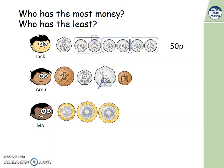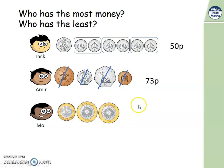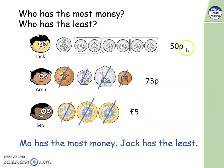Let's have a look at Amir. Remember, we always start with the largest amount and add on from there: 50 pence, add 20 pence — that's 70 pence, add 2 more — 72 pence, add 1 more — is 73 pence. Now let's look at Moe — he's got fewer coins, but does he have the least? 2 pence, add 2 pence, add 1 more — he's got 5 pence altogether. So Amir has got the most money and Jack actually has the least, even though he has more coins — they don't have the higher value.